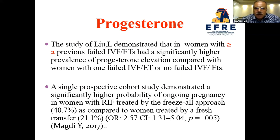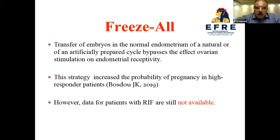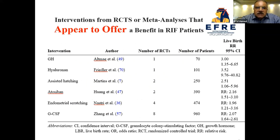A single prospective cohort study demonstrated a significantly higher probability of ongoing pregnancy in women with RIF treated by a freeze-all approach compared to fresh transfer. The hypothesis of freeze-all is that transferring embryos in a normal endometrium in a natural or artificially prepared cycle bypasses the effect of ovarian stimulation on endometrial receptivity. This strategy increases the probability of pregnancy in high-responder patients; however, data for RIF patients specifically are still not available.